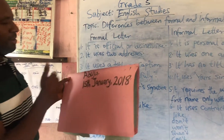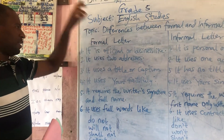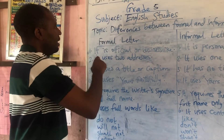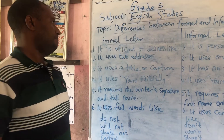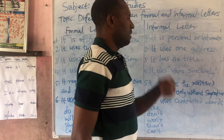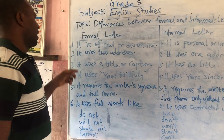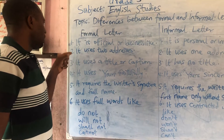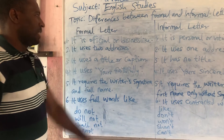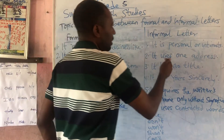Having looked at the addresses, we are going to see more of the differences. Number one: a formal letter is official or business-like, whereas an informal letter is personal or intimate — it is the letter you write to someone who is very close to you. Number two: a formal letter uses two addresses, while an informal letter uses one address.